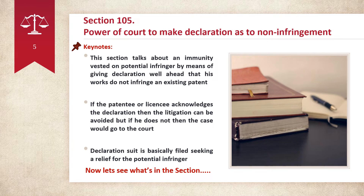Before going into Section 105 — Power of Court to Make Declaration as to Non-Infringement — let's have a quick discussion. This section talks about an immunity vested on a potential infringer by means of giving a declaration well ahead that his work is not infringing any patented invention or existing patent. If the patentee or licensee acknowledges the declaration, then the litigation can be avoided. But if the patent holder does not, then the case would go to court. A declaration suit is basically filed seeking relief for the patent infringer.